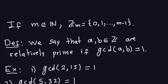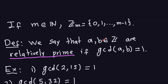So the thing we're going to talk about is the following. If you take two integers a and b that are elements of Z — which is just the integers — we're going to say that those are relatively prime. We are defining this concept: relatively prime. We say those two numbers are relatively prime if the greatest common divisor between them is equal to 1.